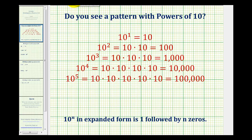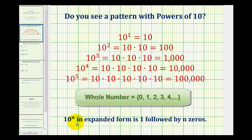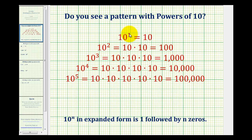So one of the things that we'll notice is that when we raise ten to the power of n, where n is a whole number, in expanded form it'll be one followed by n zeros. Notice ten to the first has one followed by one zero, ten to the second has one followed by two zeros, ten to the third has one followed by three zeros, and so on.